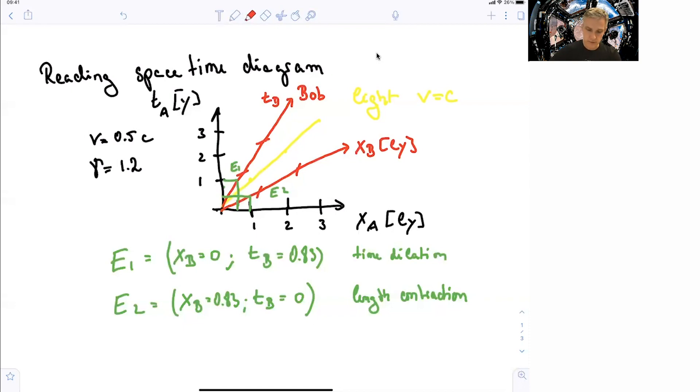And I want to discuss two specific events. The first one here, event number one, is the one where ta, the time for Alice, is 1, and xb, the space for Bob, is equal to 0. So this event lies on Bob's timeline. If we read off the time on Bob's clock, we see it's 0.83, 1 over gamma. And here we can immediately read off time dilation for this event. Note that while xb for Bob is equal to 0, xa for Alice is not 0.